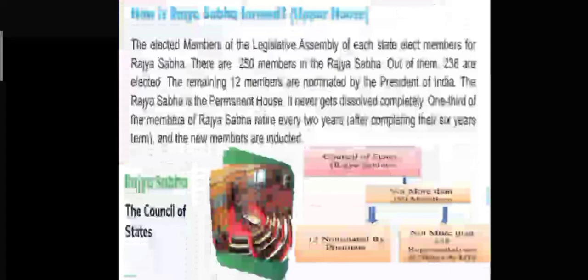Let's look into how the Rajya Sabha or the upper house is formed. The elected members of the Legislative Assembly of each state elect members for Rajya Sabha. There are 250 members in the Rajya Sabha, of which 238 are elected. The remaining 12 members are nominated by the President of India. The Rajya Sabha is the permanent house and it never gets dissolved completely. One third of the members of Rajya Sabha retire every two years after completing their six-year term and new members are included.